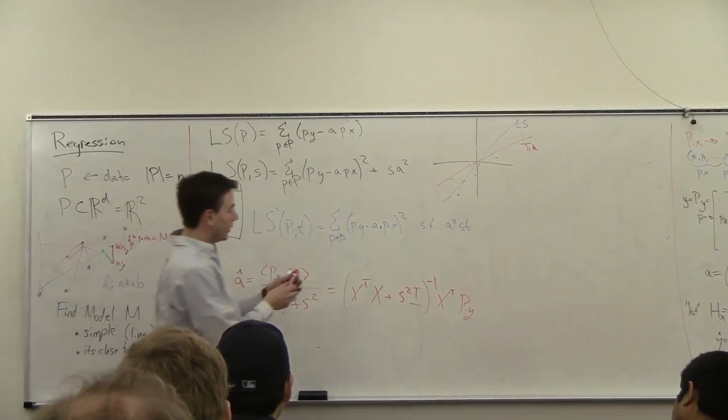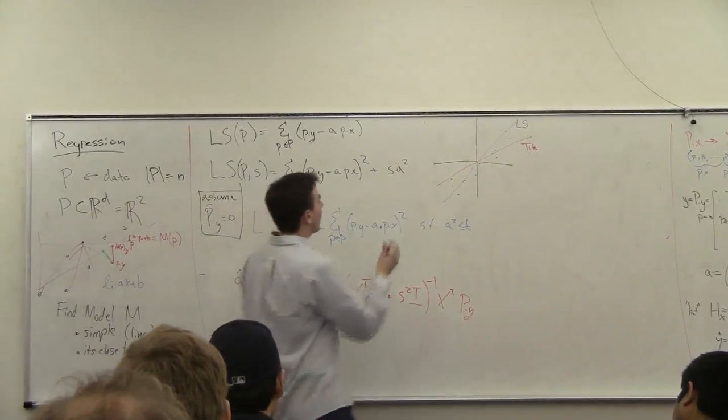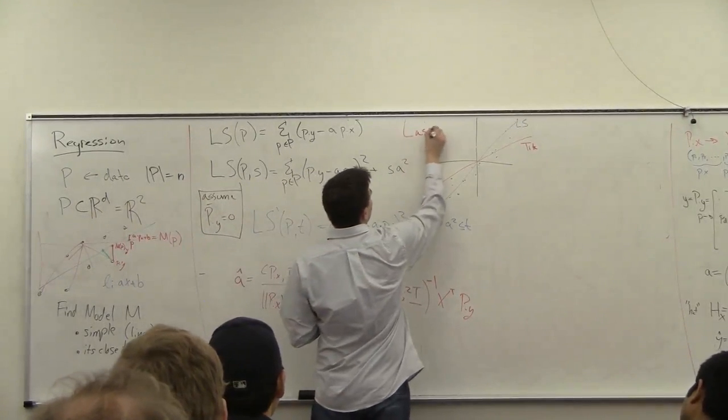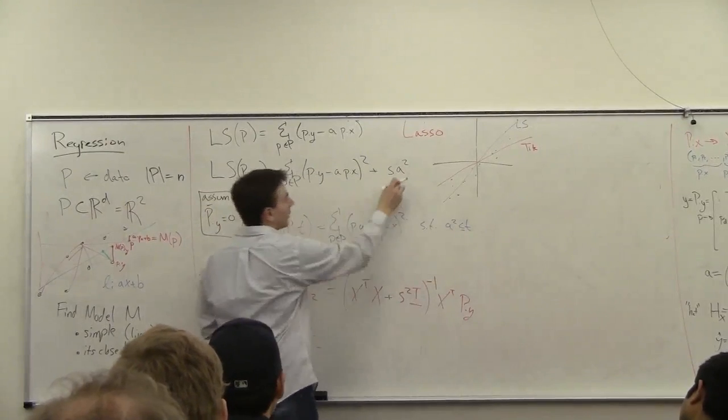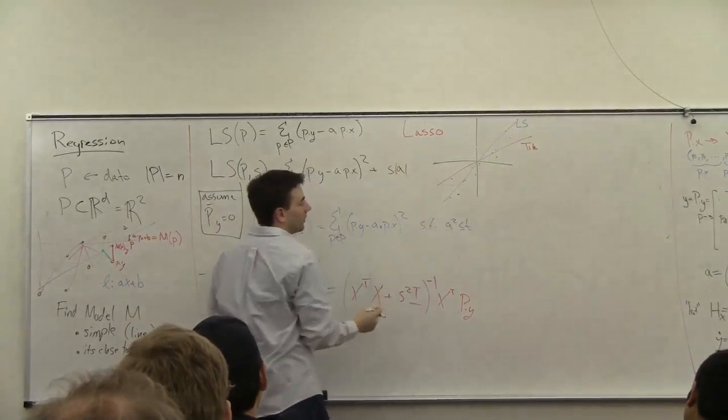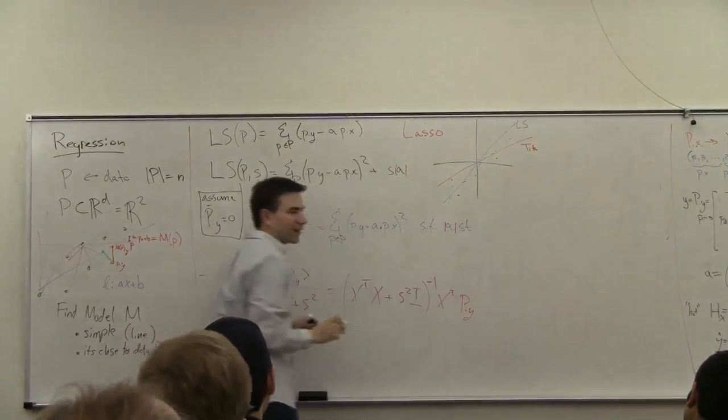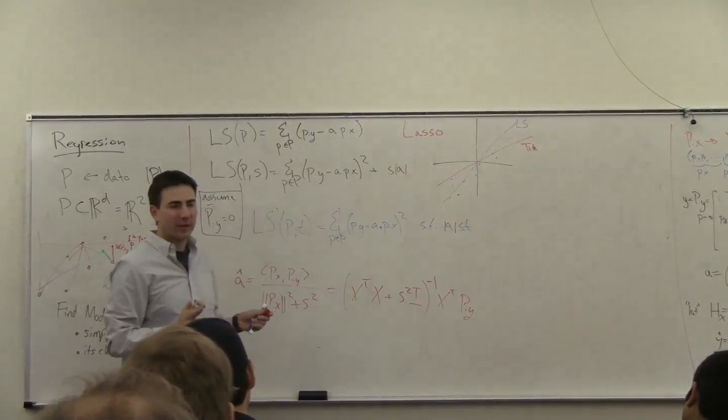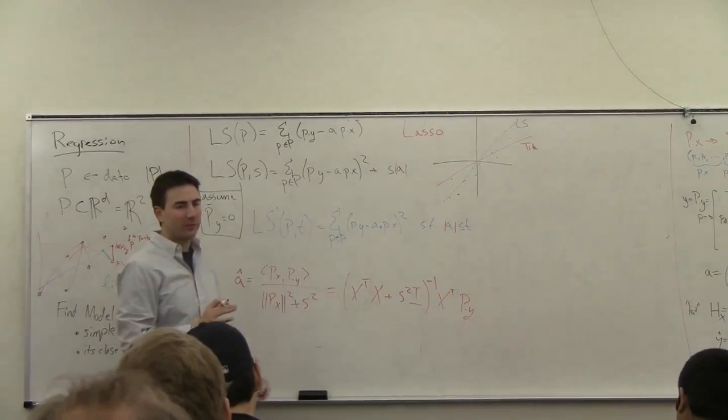There's another version of this called Lasso, where instead of using squared here, what you do is you use the absolute value. And actually, in one dimension, these are exactly the same. You just need different s or t parameters.